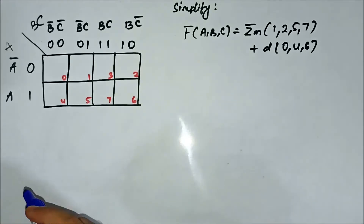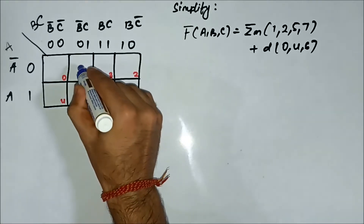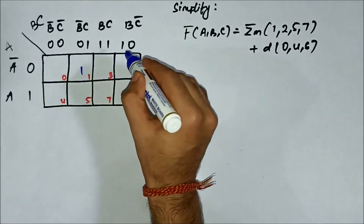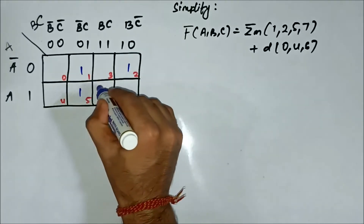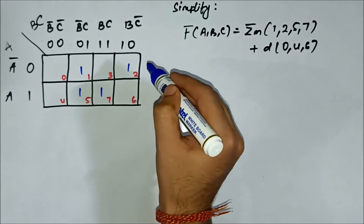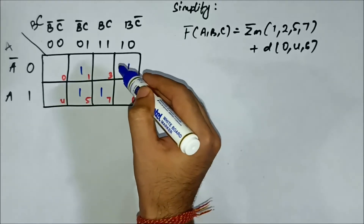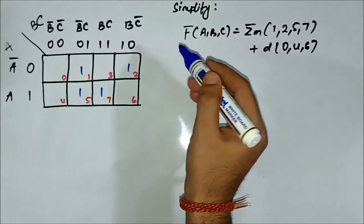Minterms 1, 2, 5, and 7 will be marked as 1. Don't-care values 0, 4, and 6 will be marked as X.